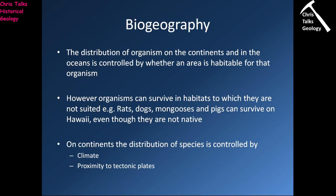We also need to think about biogeography — essentially, how organisms are distributed. The distribution of an organism on the continents and in the oceans is controlled by whether an area is habitable for that organism. However, organisms can survive in habitats to which they are not suited — for example, animals like rats, dogs, mongooses and pigs can survive on Hawaii even though they are not native to that environment. On the continents, the distribution of species is primarily controlled by climate and proximity to tectonic plates. Tectonic processes can produce things like mountain ranges or rift valleys, which will be a natural barrier to the migration of organisms.